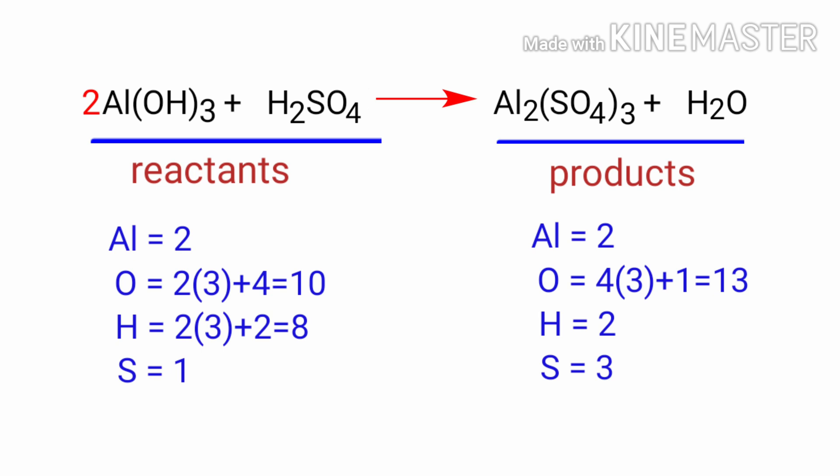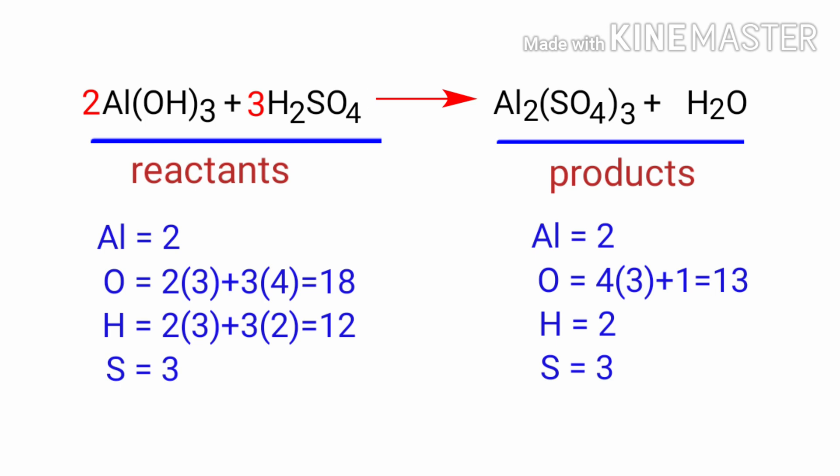Now we need to balance the sulphur atoms. To do this, we need to put a coefficient of 3 in front of H₂SO₄. The sulphur atoms are balanced.